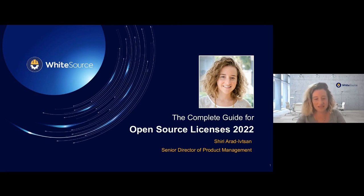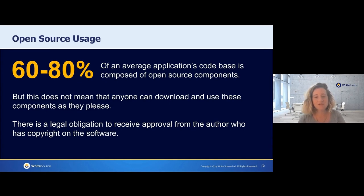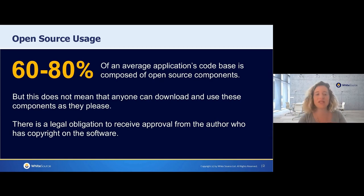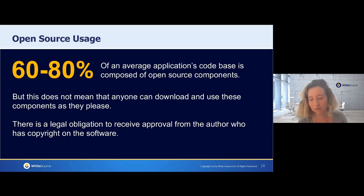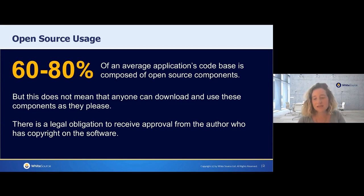As developers, as software people, usually when it comes to the legal aspect of open source, we're all getting blurry. So let's start. We know that around 60 to 80% of an average application is comprised of open source. But not all open source components are equal. Something that each and every software should have, if it's out there on the internet, is a license. A license is basically a legal obligation to receive approval from the author who actually has the copyrights on the software.